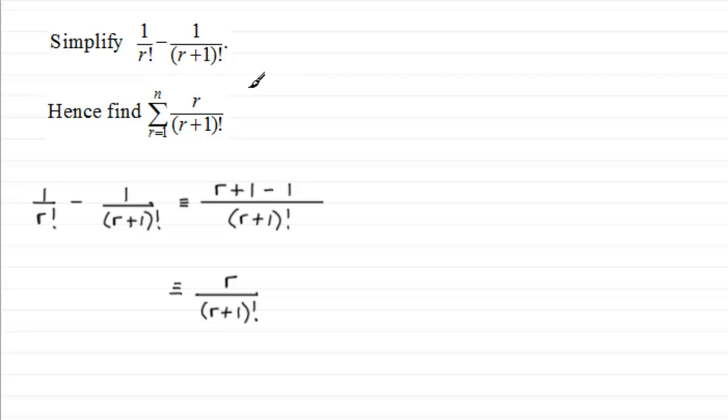So hence find the sum, r going from 1 to n of r over (r+1) factorial. So we've obviously got this here, and this gives us a clue because all we've got to do now is... let's just say that Sigma of r going from 1 to n of r all over (r+1) factorial.